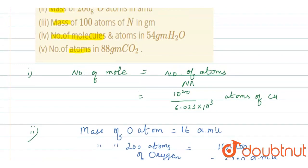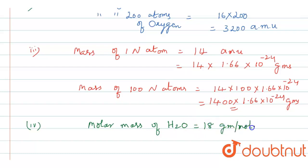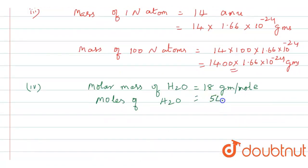The fourth question: what is the number of molecules and atoms in 54 grams of water? The molar mass of water is 16 plus 2, which is 18 grams per mole. So moles of water molecules equals 54 grams divided by 18, which gives us 3 moles of water.